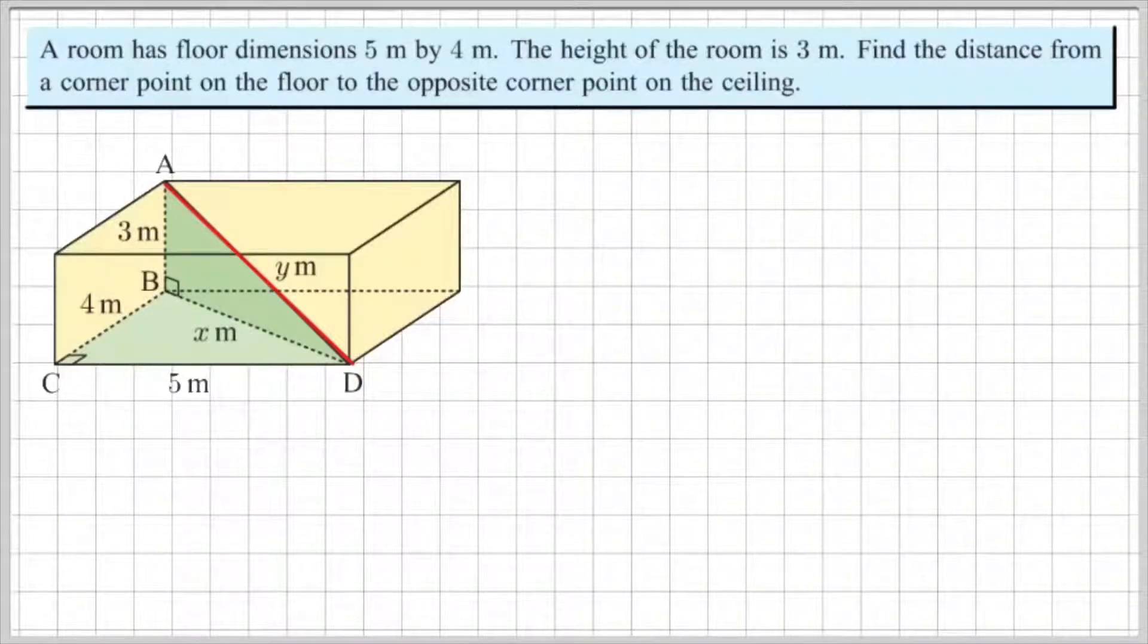So this is a two-part process where we initially need to find this length here, the diagonal BD. And then we can use that answer to find out the length AD.